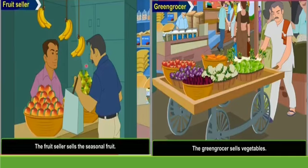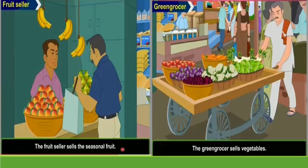When you go into the market, you will see a Fruit Seller and a Green Grocer. What does a Fruit Seller do? The Fruit Seller sells seasonal fruits. Whichever fruits you want to eat that are necessary for your body, you go to the Fruit Seller and buy fruits. The Green Grocer sells vegetables — you must eat green and leafy vegetables which are good for our health.